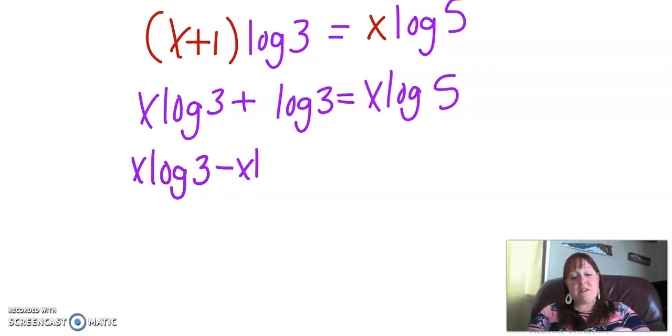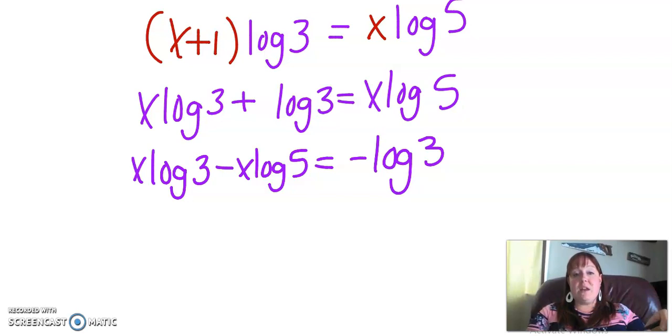So we're going to subtract x log five from both sides, and we're going to subtract log three from both sides. So we're going to have minus negative log three on that side. Now I have everything with an x on one side and everything without an x on the other side.